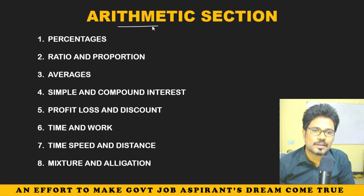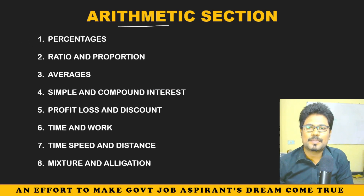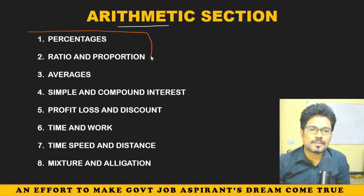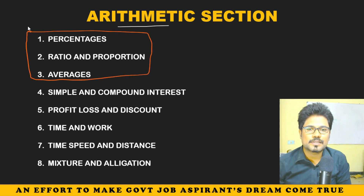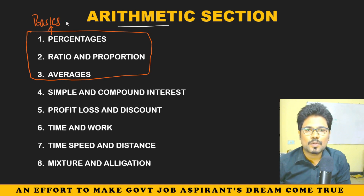In the Arithmetic section, there are only five chapters. Simple point: Averages, Ratio, Proportion, and Percentages — all of these are called basics. These basics are included in the Arithmetic section.